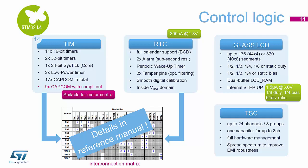The RTC on board this device consumes 300 nanoamps. It's a full calendar with support for multiple alarms, periodic wake-up timers, three tamper pins, and calibration features for accurate timing. We also have an LCD segment display capable of generating up to 176 segments at 44×4 or 320 segments at 40×8, with flexibility to control various duty cycles and biasings depending on the type of segment display connected.